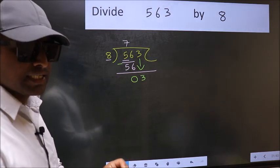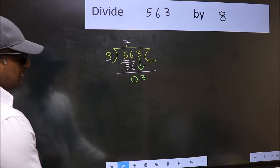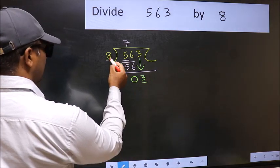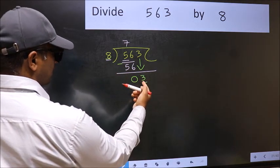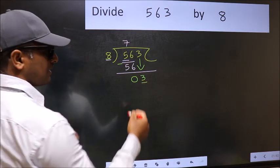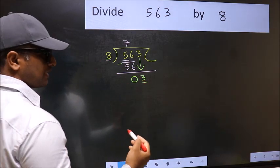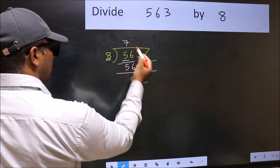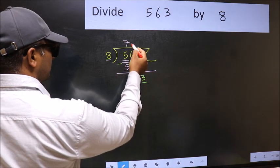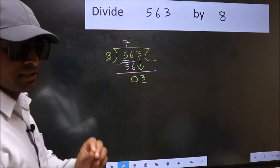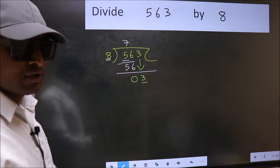And the mistake is this: here we have 3 and here 8. 3 is smaller than 8. So what many do is they directly put a dot and take 0, which is wrong. Why is it wrong?